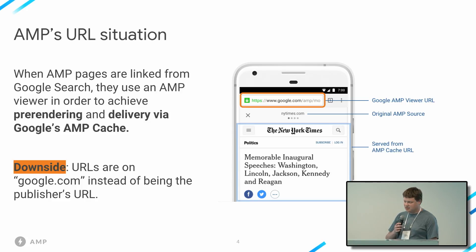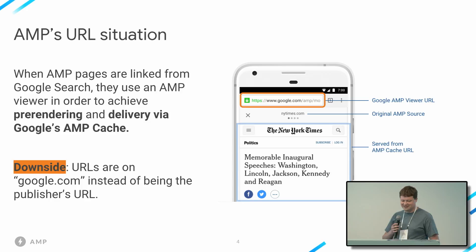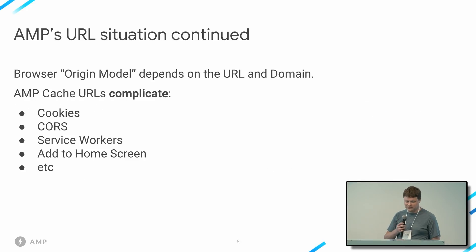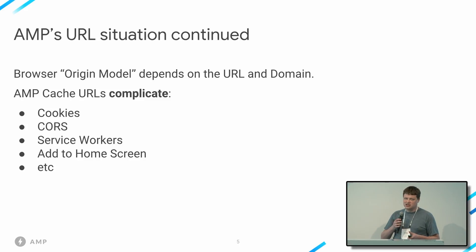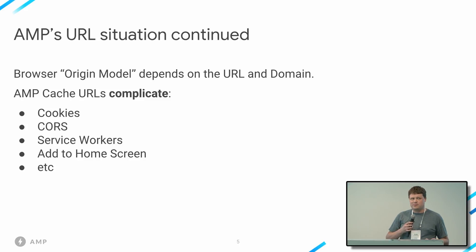Let's talk a little bit more about privacy-preserving pre-rendering. I think Malta mentioned this, and a few other speakers mentioned this earlier this morning. How does it work, and what does it do? Before we talk about privacy-preserving pre-rendering, we need to understand what's going on with AMP's URL model, and why we actually care about this. AMP cache URLs complicate a lot of different things.